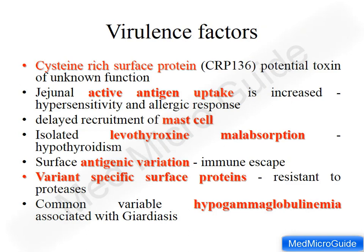Various virulence factors potentiate the pathogenicity of Giardia. One such factor is the cysteine-rich surface protein CRP136, a potential toxin whose function is not yet fully known. When Giardia lamblia attaches to the jejunal wall, it increases the uptake of antigens from the intestine, enhancing hypersensitivity and allergic responses. The attachment also delays recruitment of macrophages from the tissue, thereby escaping the deleterious effect of macrophages.